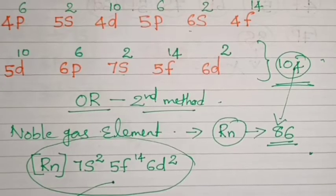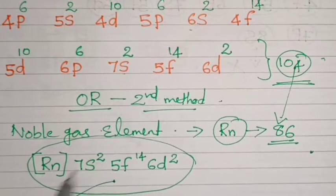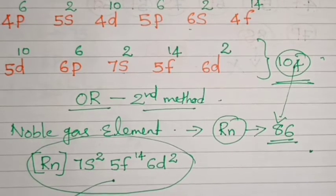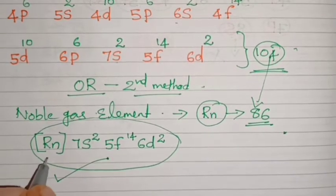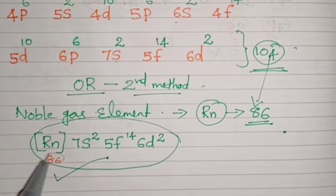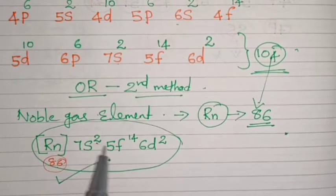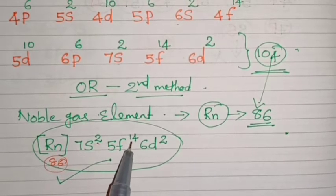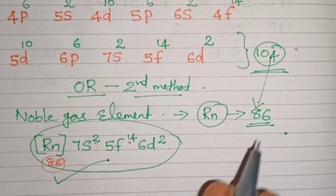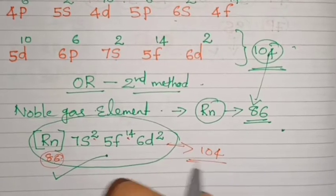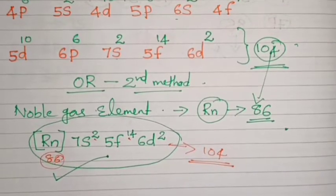The other method for writing the electronic configuration is by using the nearest noble gas element. This is the third method for writing electronic configuration using the noble gas element. Moving to the next element.